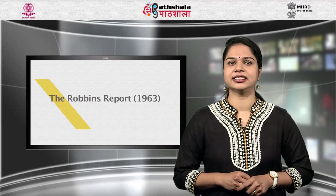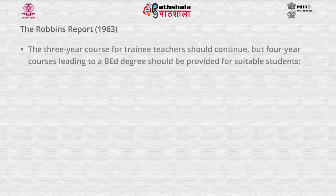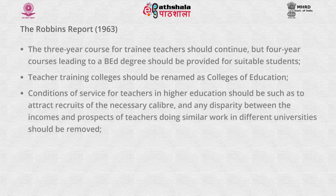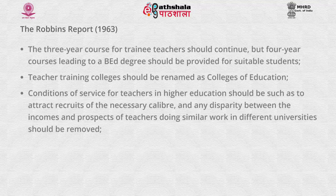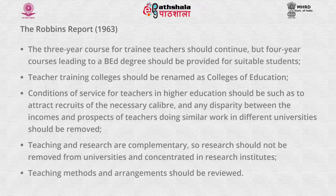Moving on to the Robbins Report, 1963. Some of its major recommendations are: the three-year course for trainee teachers should continue, but four-year courses leading to a B.A. degree should be provided for suitable students. Teacher training colleges should be renamed as colleges of education. Conditions of service for teachers in higher education should be such as to attract recruits of the necessary calibre, and any disparity between incomes and prospects of teachers doing similar work in different universities should be removed. Teaching and research are complementary, so research should not be removed from universities and concentrated only in research institutes. Teaching methods and arrangements should also be reviewed.